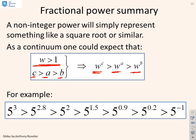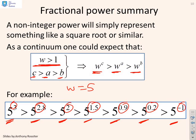An example of this, just to convince you, is if I let w equal 5, then you can see 5 cubed is bigger than 5 to the 2.8, which is bigger than 5 squared, which is bigger than 5 to the 1.5, which is bigger than 5 to the 0.9, which is bigger than 5 to the 0.2, which is bigger than 5 to the minus 1. So what you can see is if I arrange these indices in order, then putting 5 to the index will also appear in order.